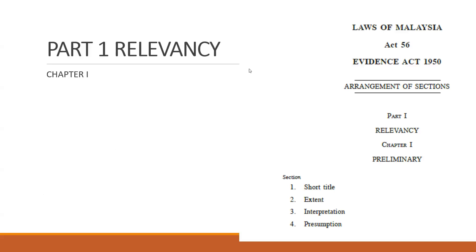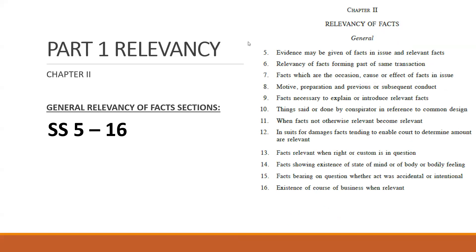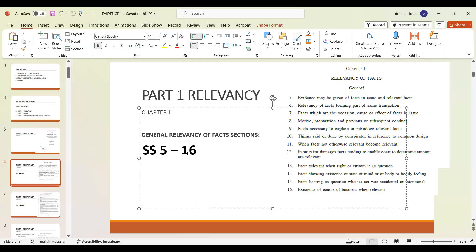We'll have a very quick run-through. The most important section for chapter one is actually Section 3 — Interpretation. Very, very important. You can find a lot of definitions there. For example, what is a fact? What is so-called relevant? What does proof mean from this section? Please do yourself a favor: read Section 3 many, many times until you really understand what it is about. We are under Part One — Relevancy — and the relevant sections for this is actually Section 5 to 55.